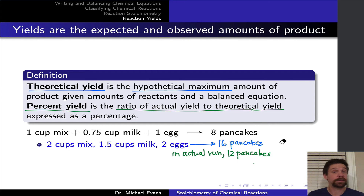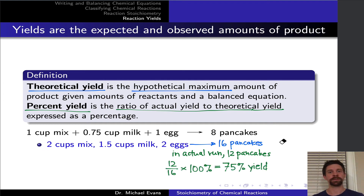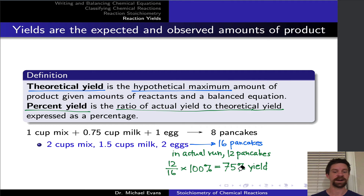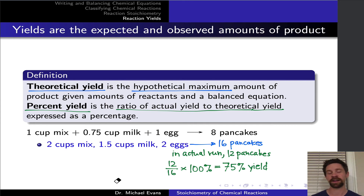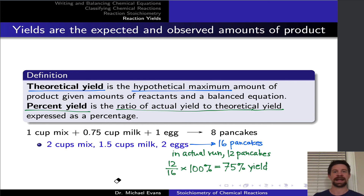For example, going back to our pancake situation: the theoretical yield of pancakes is 16, since we have double the amounts of ingredients listed in the balanced recipe. But if we actually made pancakes and ended up with 12, our percent yield is the ratio of what we actually obtained divided by the theoretical yield, times 100% — giving 75%. Percent yield requires theoretical yield as the denominator, so limiting reagent and theoretical yield calculations are prerequisites.